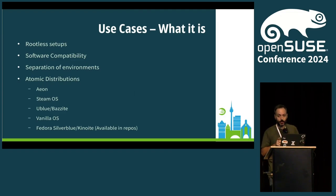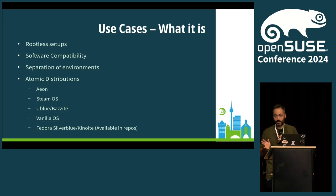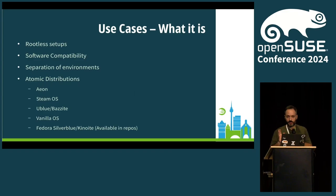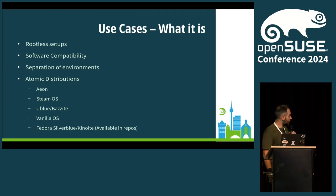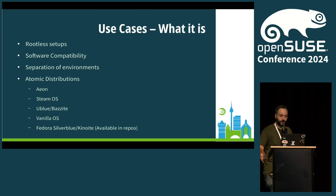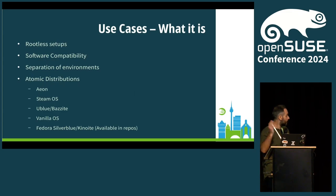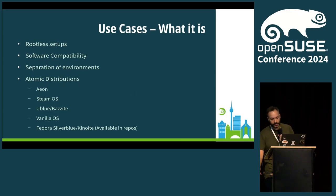It's good for separation of environments. It's not isolating the environments, but it's useful if you need something like virtual environments but for whole user lands instead. It's shipped by default by almost all atomic and immutable distributions including Aeon. SteamOS also ships it by default. The Ublue and Bluefin folks ship it. Vanilla OS. And for Fedora, it's available in the repos.